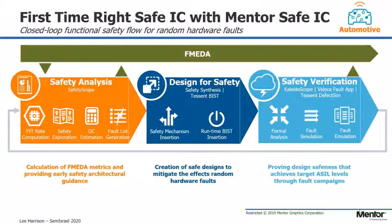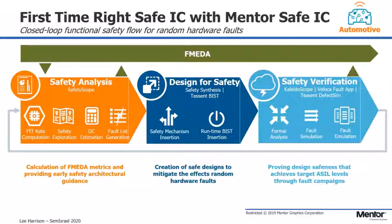Now let's talk about the other functional safety technology within the Tessent Safety ecosystem. In many cases BIST may not be the appropriate safety mechanism, or you may intend to use BIST as a secondary mechanism to effectively test the tester. The OSTEMPA functional safety flow provides a complete flow enabling detailed safety analysis of your design using safety scope, giving estimated diagnostic coverage and identifying where additional safety mechanisms are needed. The design-for-safety part of the flow handles inserting those safety mechanisms — including the BIST technologies already discussed. Finally, safety verification involves running full fault injection campaigns with the inserted mechanisms, producing real coverage metrics fed into your FMEDA ready for ISO 26262 certification.